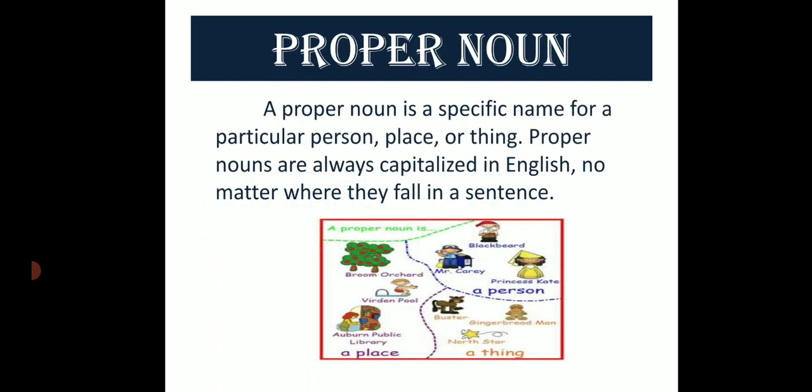A proper noun is a specific name for a particular person, place or thing. Proper nouns are always capitalized in English, no matter where they fall in a sentence. Vyakti vachak sangya ek vishesh vyakti, sthan ya vastu ka naam hota hai.